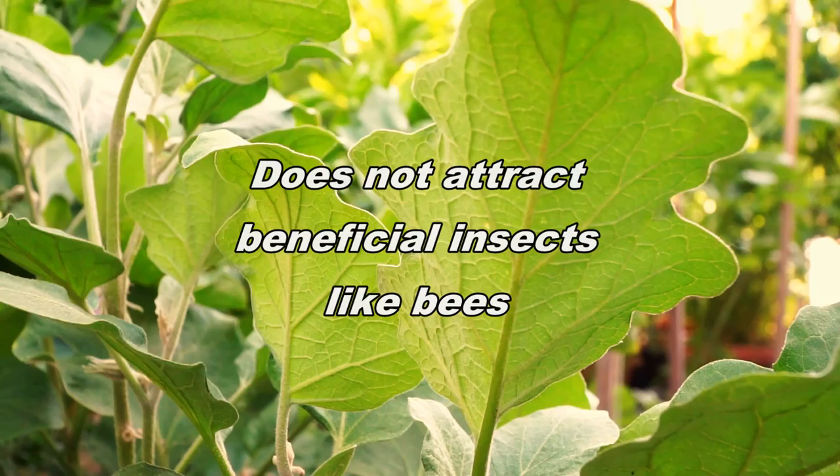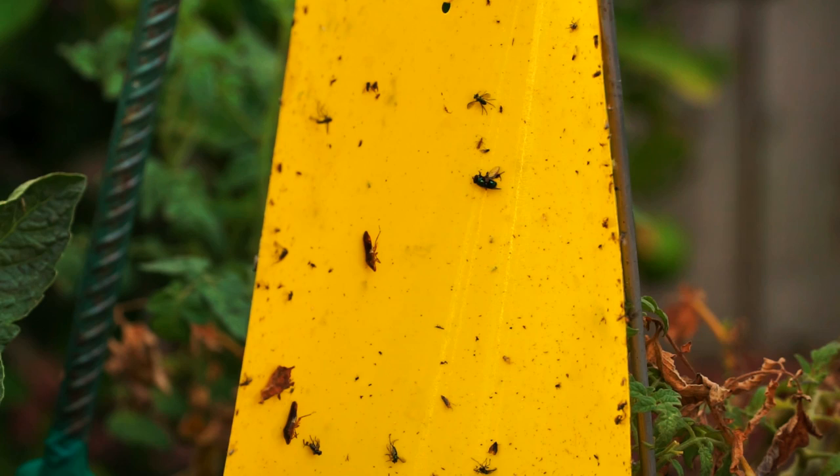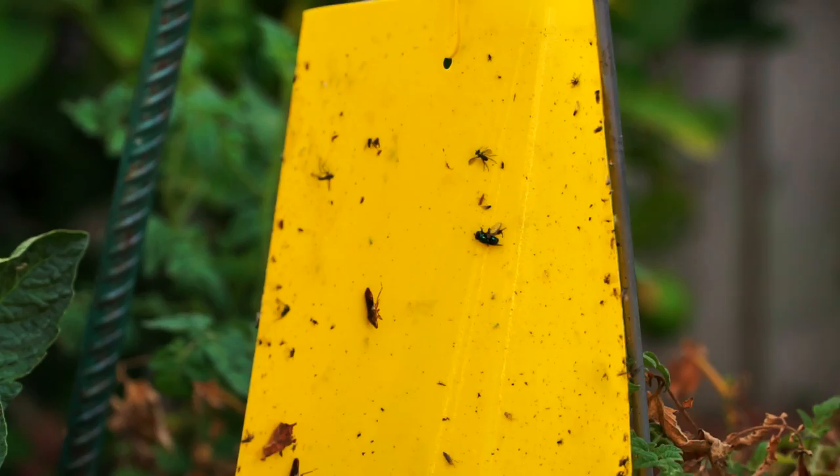I don't know how this works, but so far I haven't seen a single beneficial insect. It's only the white flies, the moths that lay eggs on your plants that form the loopers and the caterpillars that get trapped.